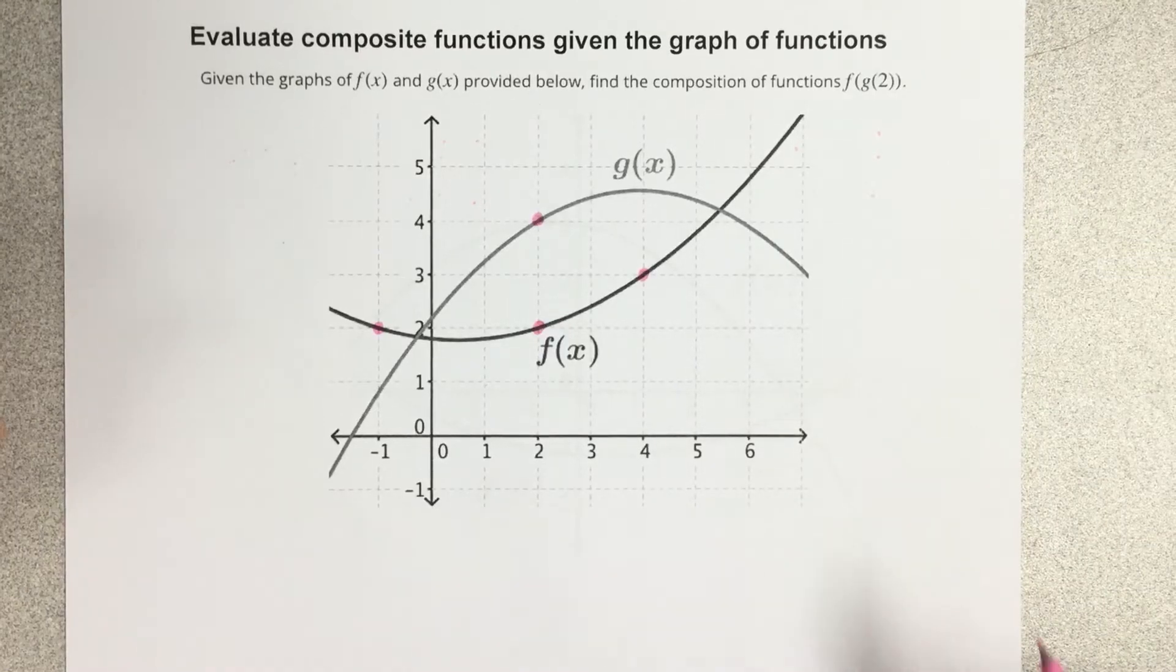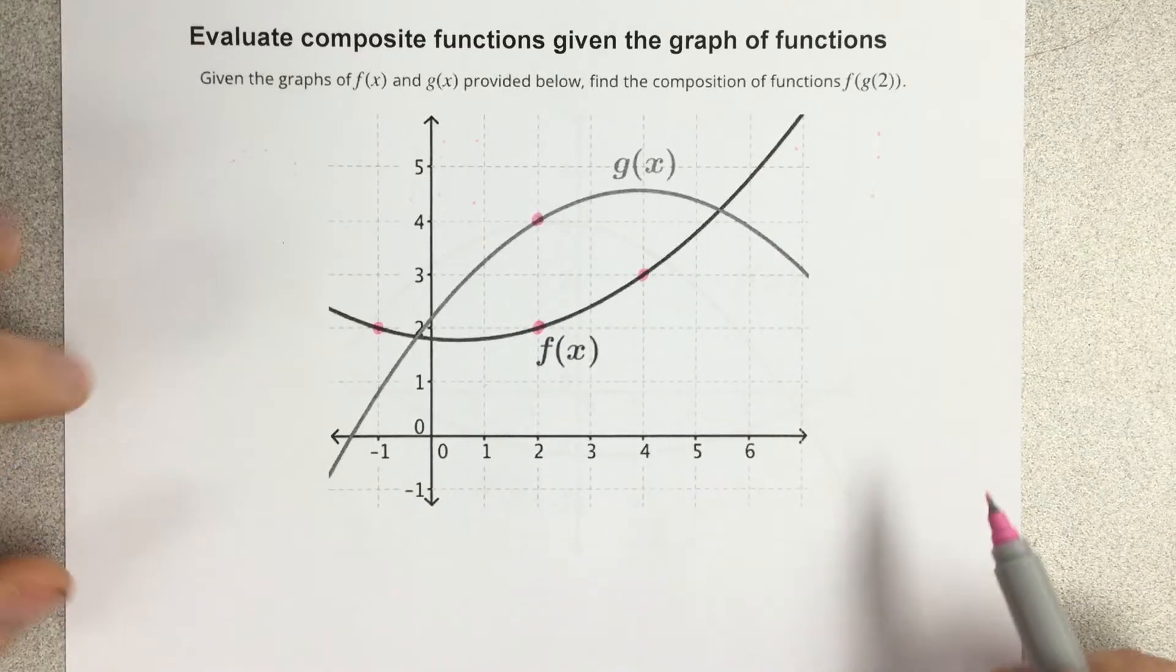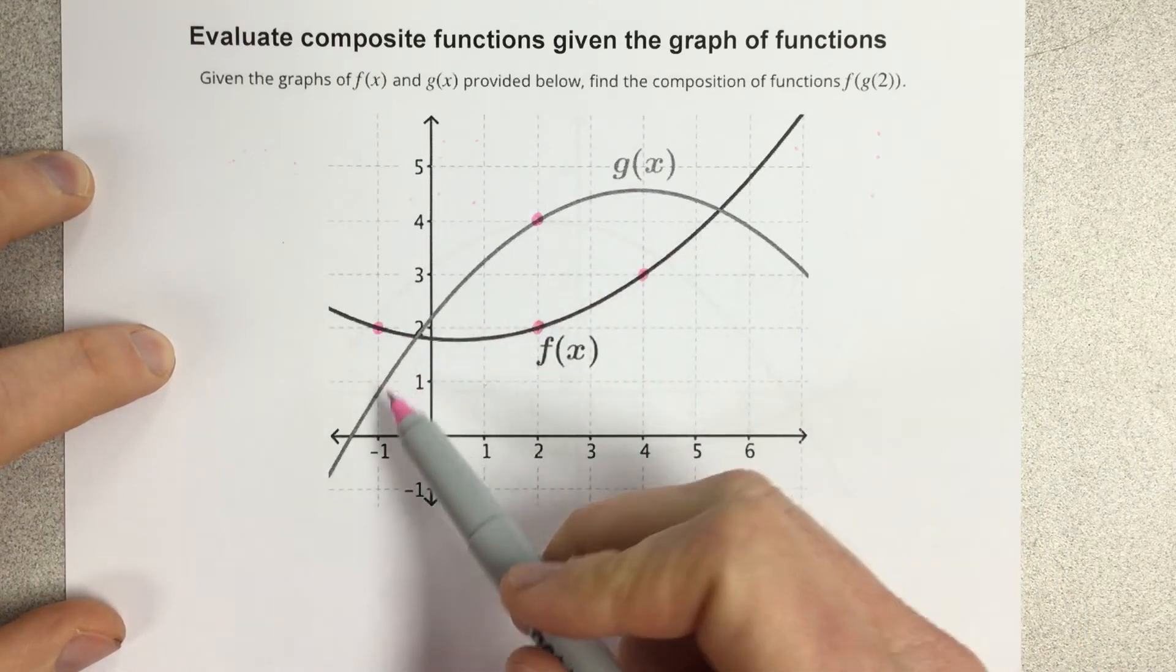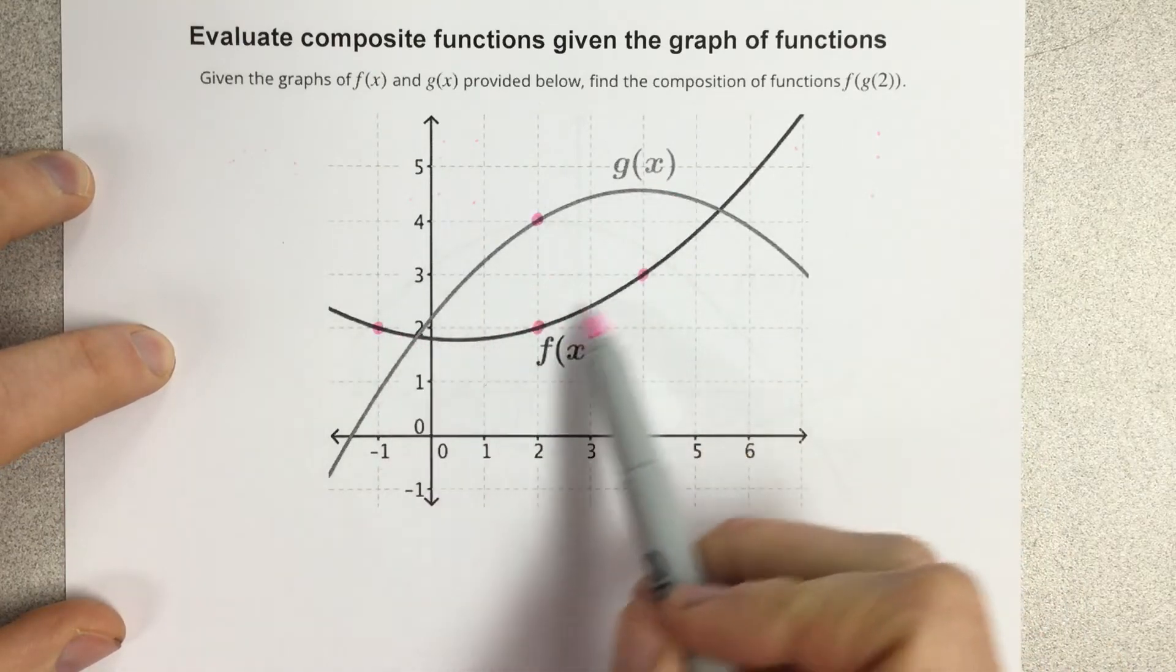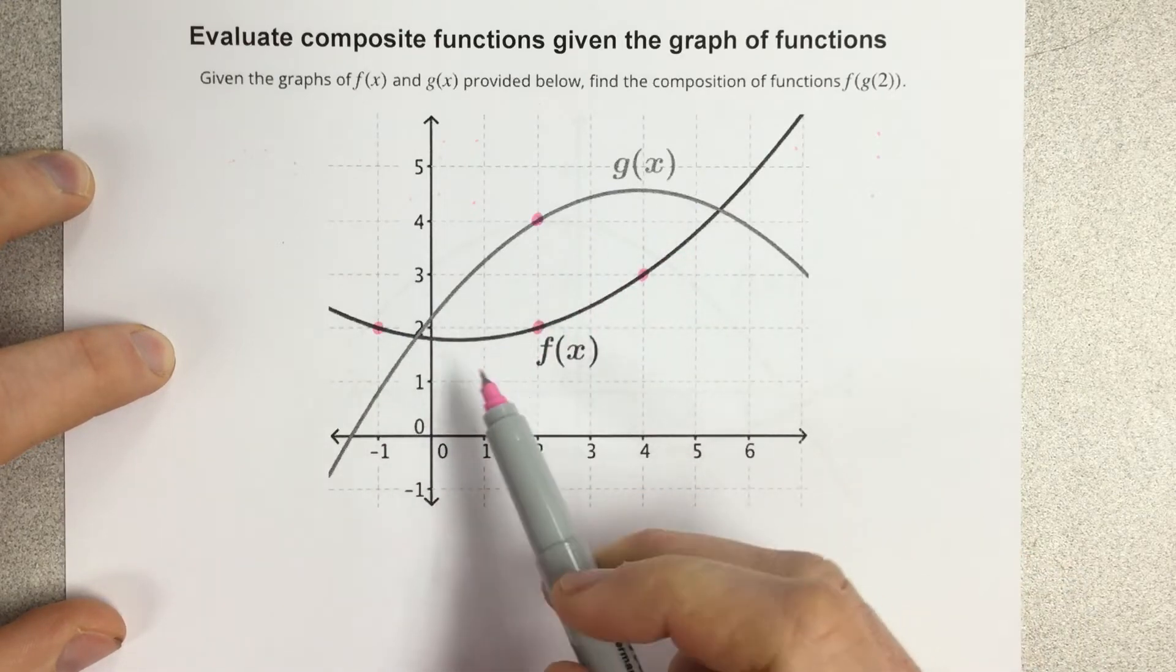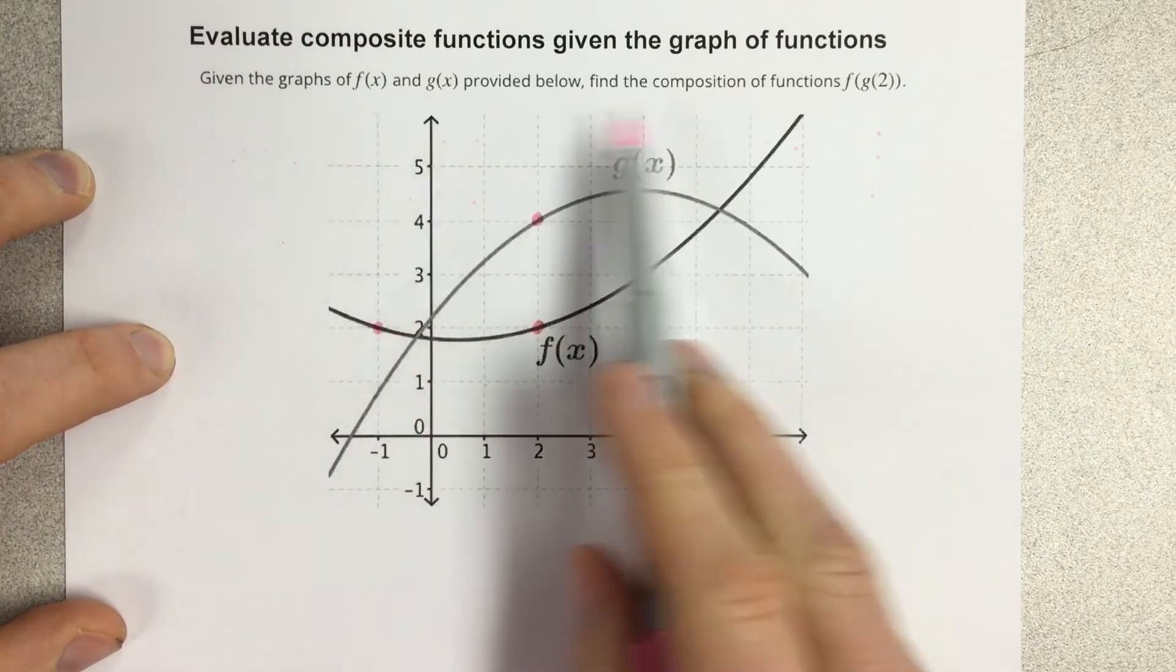In this video, we're going to evaluate composite functions given the graph of functions. So they give you two graphs. They got f of x here and g of x. Both look sort of like a parabola. They may or may not be parabolas, but that doesn't really matter. So let's look at the question.